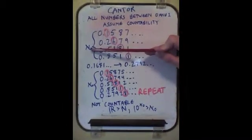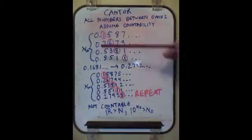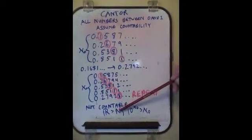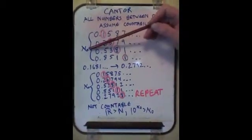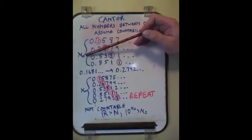Now, aleph-null is, for reference, the level of countability of, the level of infinity that would be countable in natural numbers. In other words, it's the very bottom line, base level of infinity, which would be the infinity of counting numbers.